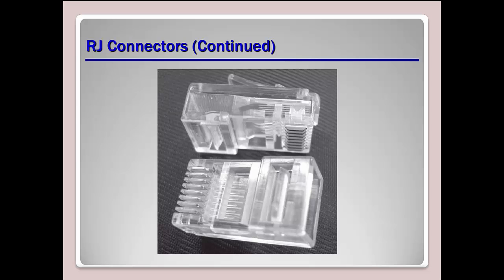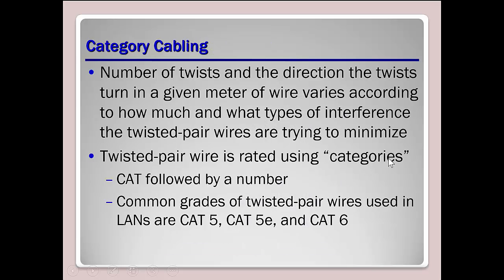Here's an example of a standard RJ45 connector — we have room for eight wires. When categorizing twisted pair cables, it's basically followed by a number: Cat5, Cat5e, and Cat6. The difference between Cat5e and Cat6 is the transmission rate — not in megabits but in megahertz.